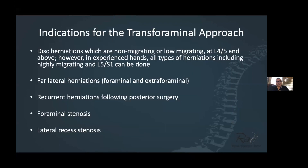The indications for the transforaminal approach: I think most disc herniations can be taken out transforaminally. The issue is always focusing on L5-S1, particularly if you have a cranially migrating disc at L5-S1 — you may struggle with that, but in experienced hands most disc herniations can be taken out. Certainly forolateral herniations are a prime indication. Recurrent disc herniations after posterior interlaminal surgery are also an excellent indication, and you can extend the approach to foraminal stenosis and lateral recess stenosis.